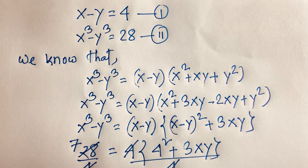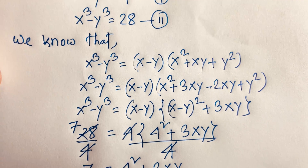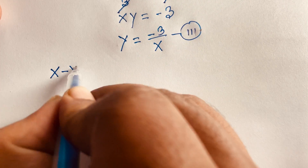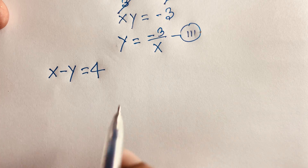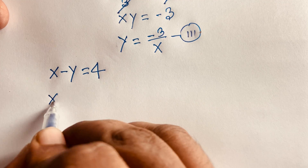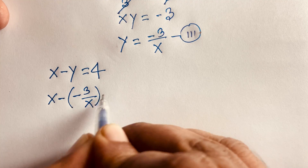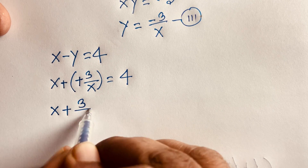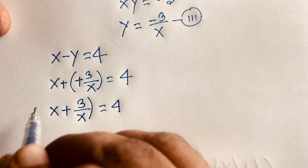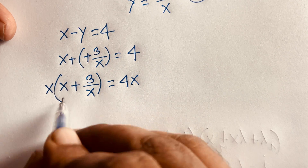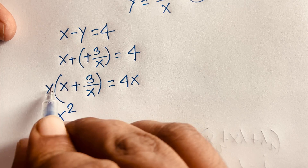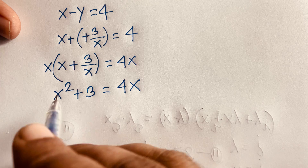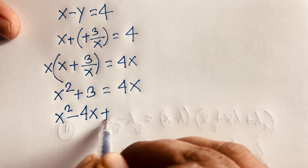Remember our first equation is x minus y equals 4. If I substitute y equals negative 3 over x into the first equation, I get x minus negative 3 over x equals 4. The minus and minus make plus, so x plus 3 over x equals 4. Multiplying both sides by x gives x squared plus 3 equals 4x, which rearranges to x squared minus 4x plus 3 equals 0.